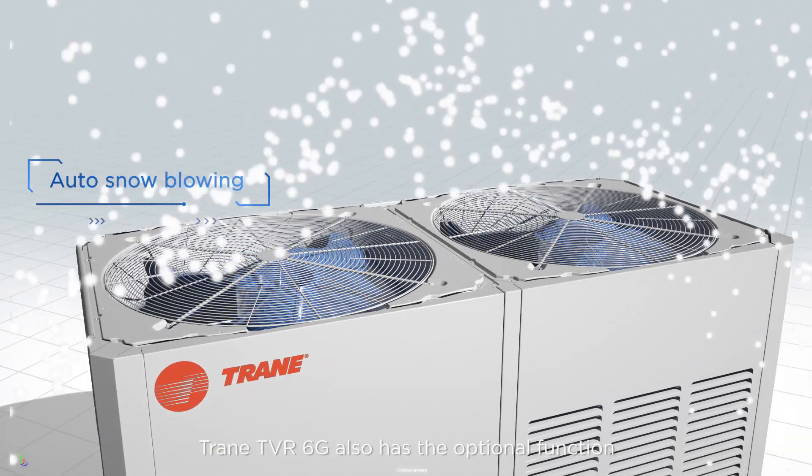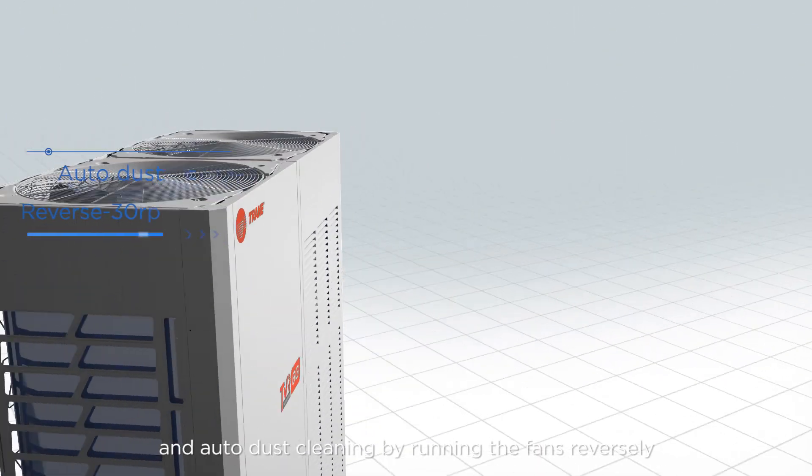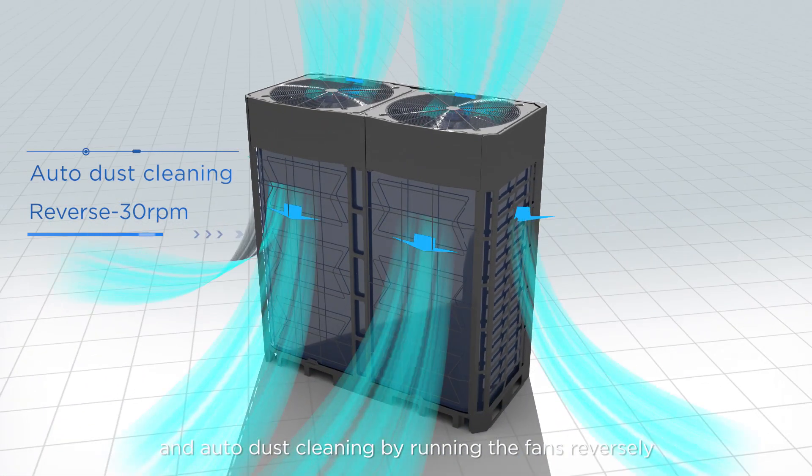TrainTVR 6G also has optional functions such as the auto snow blowing and auto dust cleaning by running the fans reversely.